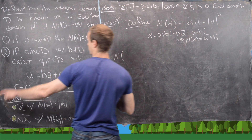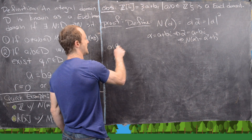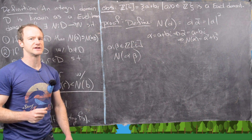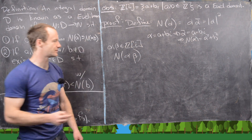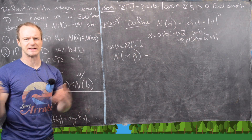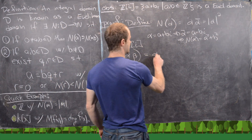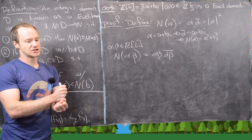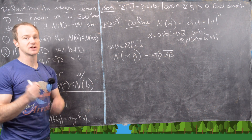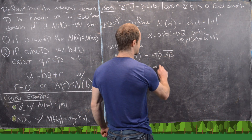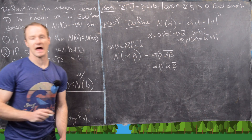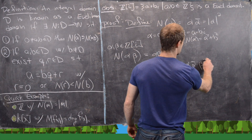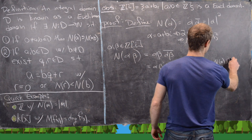Now we want to check the first property of the norm function. Let α and β be Gaussian integers and look at the norm of α times β. Using properties of complex multiplication, the norm of αβ equals αβ times the conjugate of αβ. We can use the fact that complex conjugation and multiplication commute, writing this as α·ᾱ·β·β̄, which equals the norm of α times the norm of β.